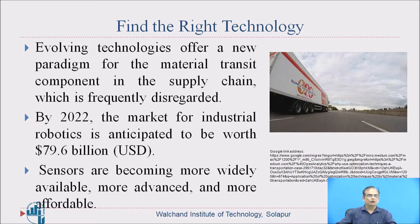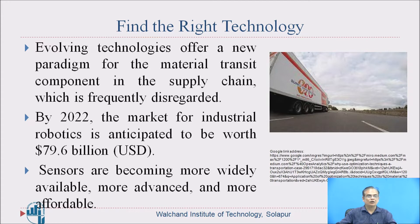For example, robotics is used for material transportation. By 2022, the market for industrial robotics is anticipated to be worth 79.6 billion dollars USD — such a huge market exists for this particular technology. Sensors are becoming more widely available, more advanced and more affordable. These latest technologies like robotics and sensors must be used for effective transportation of materials in construction processes.